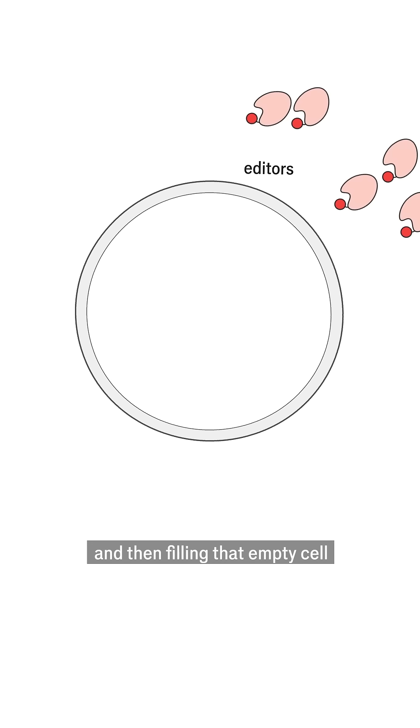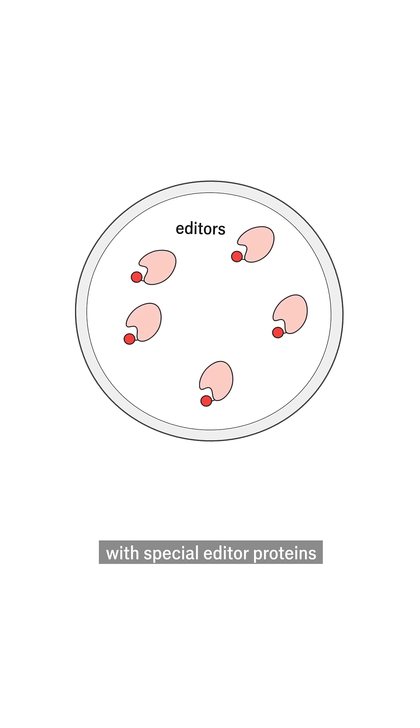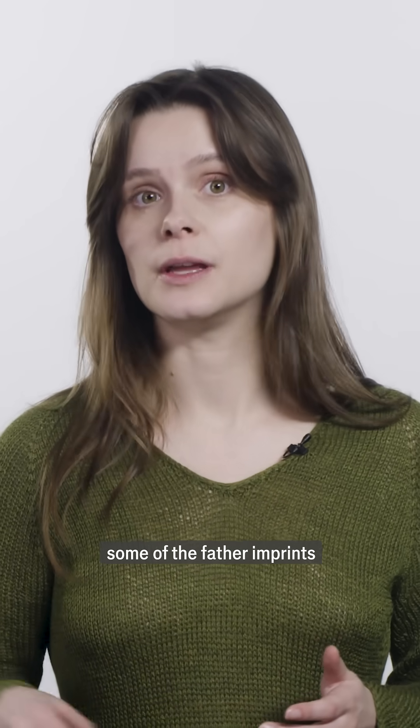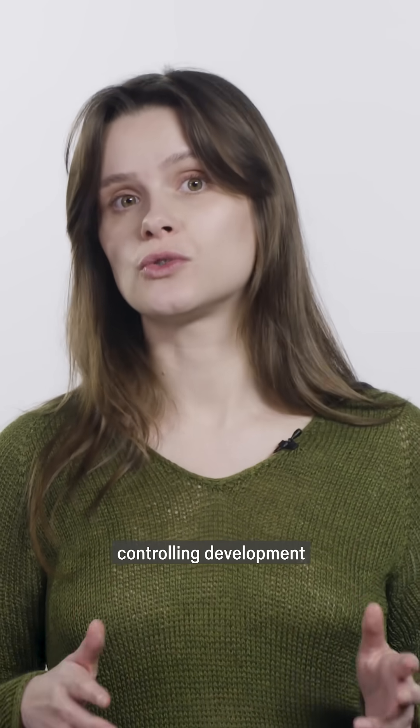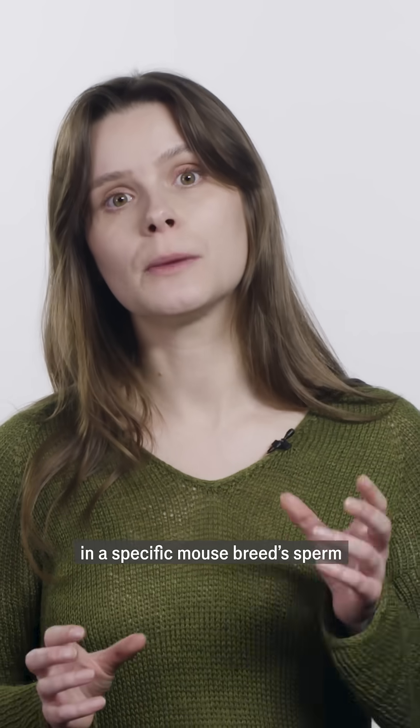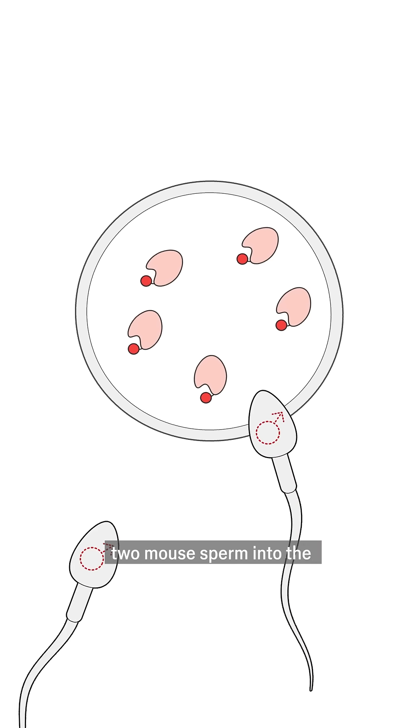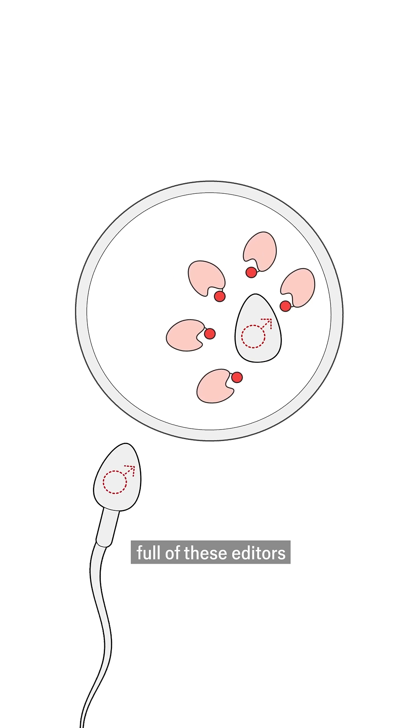And then filling that empty cell with special editor proteins. These editors were designed to switch off some of the father imprints that affect genes controlling development in a specific mouse breed's sperm. They then injected two mouse sperm into the nucleus-free egg full of these editors.